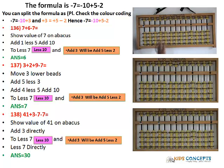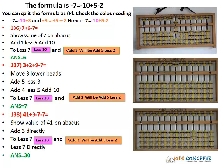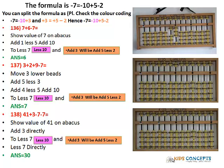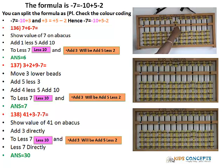Let's try this again. 7 add 6 — add 6 will be add 1 less 5 add 10. Then less 7: less 7 is less 10 add 5 less 2. Answer is 6.